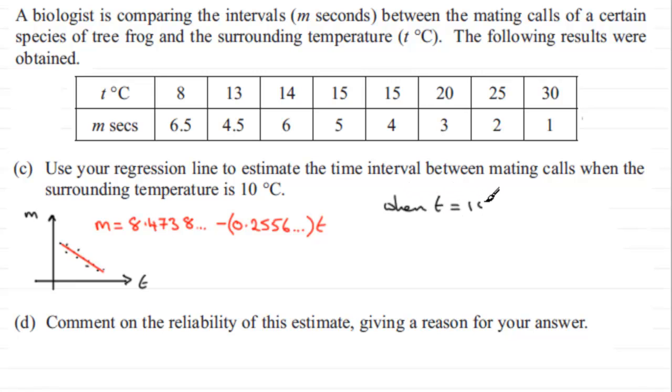We've got that m equals 8.4738 and so on, minus 0.2556 and so on, multiplied by 10. And you'll notice I've used the unrounded versions here from the previous part.